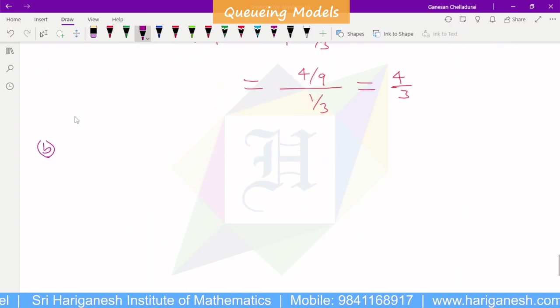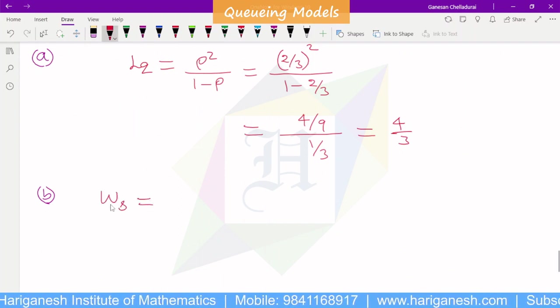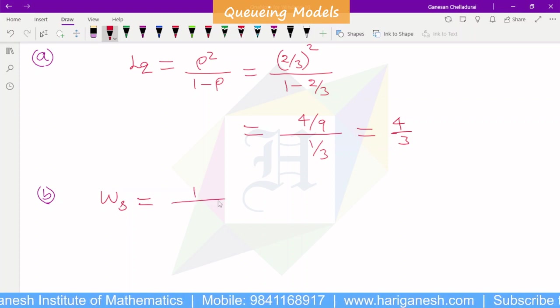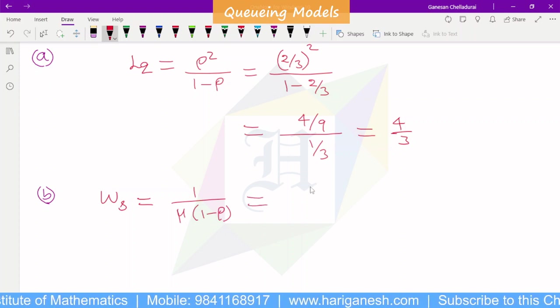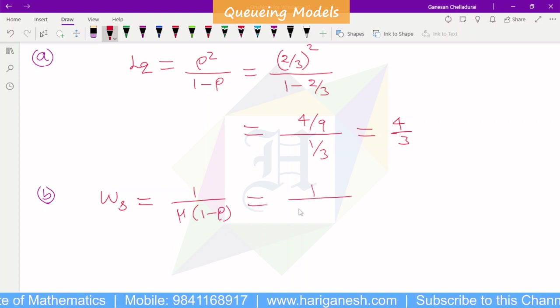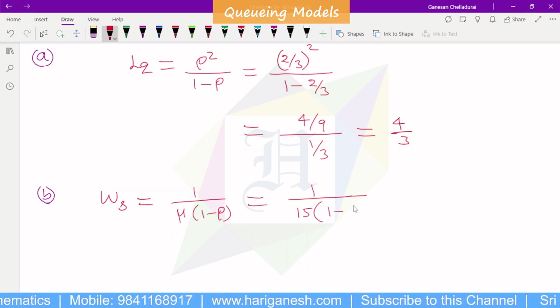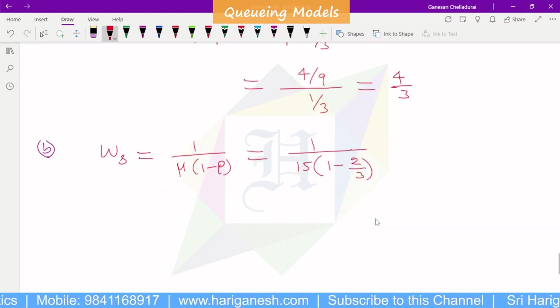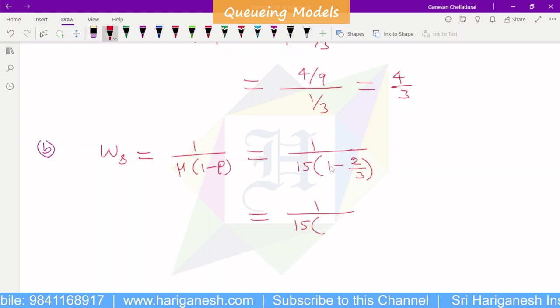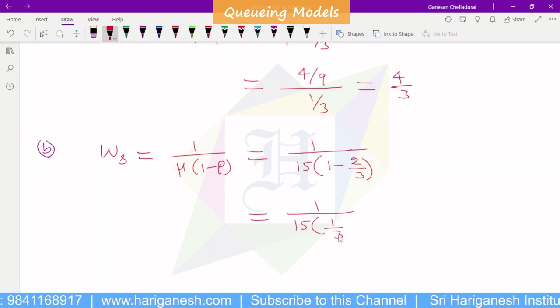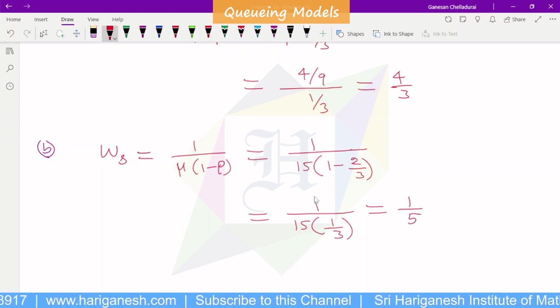WS, so the model 1 WS, waiting time of customer in the system. The formula is 1 by mu minus lambda. 1 by mu, divided by 15, so that the value 1 into 1. 1 by 15 into cross model, 3 minus 2, 1 by 3. 1 by 5. WS is 1 by 5.